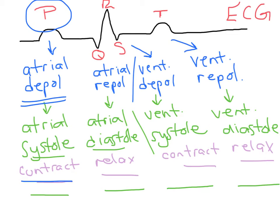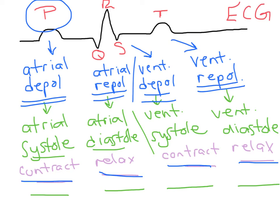Atrial repolarization leads to relaxation of the atria, and ventricular depolarization leads to contraction of the ventricle. The ventricle then repolarizes, causing it to relax, resulting in ventricular diastole. So you go through the atrial cycles first and then the ventricular cycles, with atrial diastole overlapping ventricular systole.